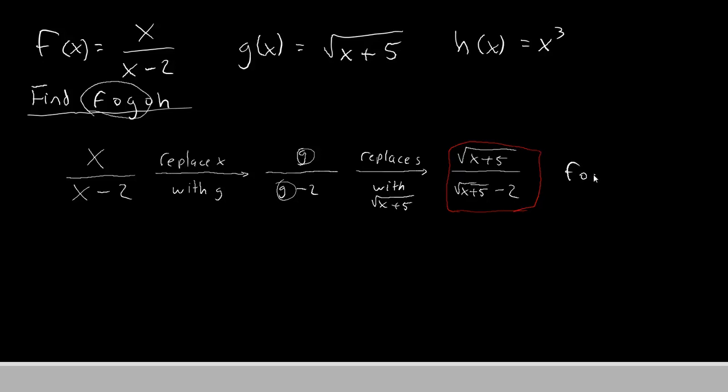Now that we've taken care of f and g, we will now shift our attention to the third letter, h. I'm just going to rewrite this function down here for clarity. Root x plus 5 divided by root x plus 5 minus 2.